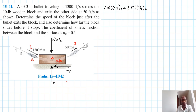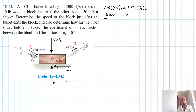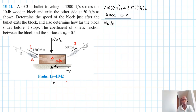We have three states, and we've been asked to determine the speed of the block just after the bullet comes out. We'll solve it in steps — step one to step two. Using conservation of momentum: the mass of the bullet times its velocity in state one, plus the mass of the wooden block times its velocity in state one, equals the combined mass times V2.